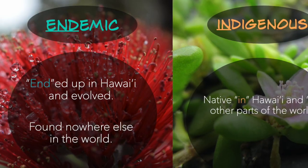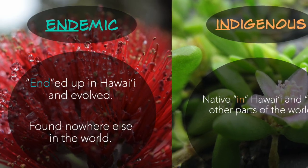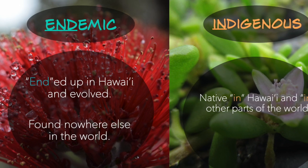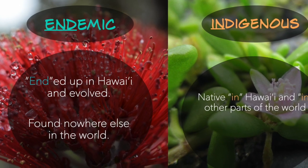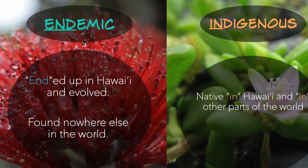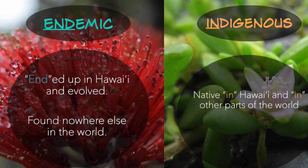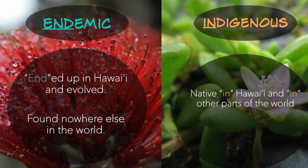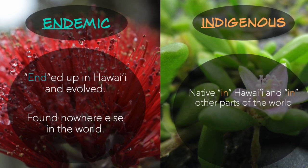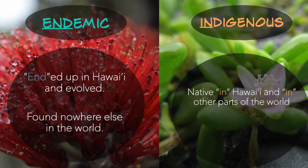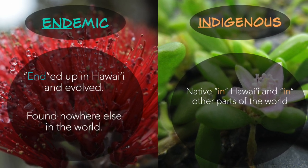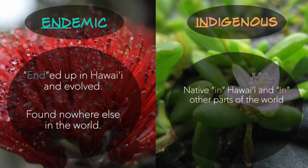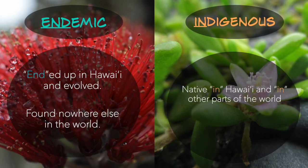Here's one way to remember the difference between the two types of native species. Endemic species ended up in Hawaii, adapted and evolved into new species, and are now found nowhere else on earth. Indigenous species are native in Hawaii and are also native in other parts of the world.